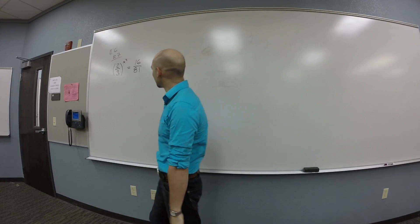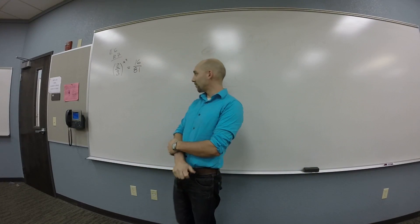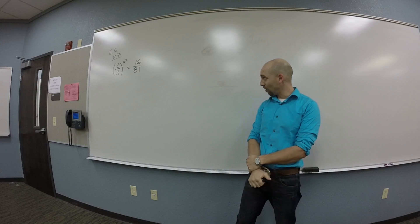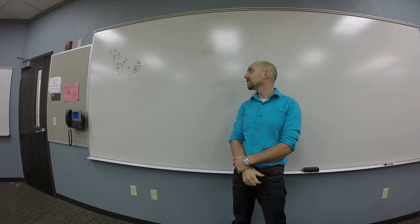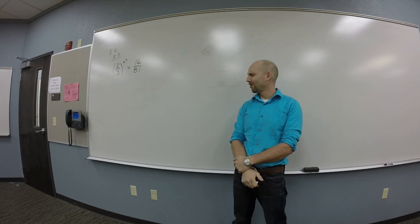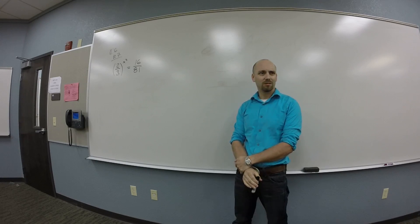All right, so we're going to do 11.6 number 7, which says we've got 2/3 raised to the x squared is 16 over 81. How do I do this?